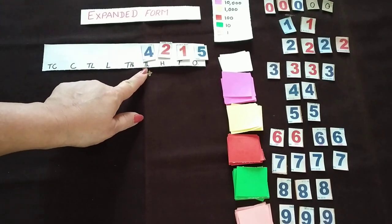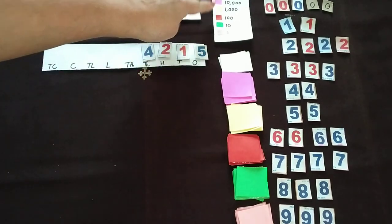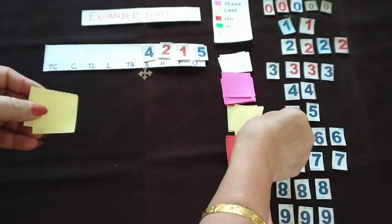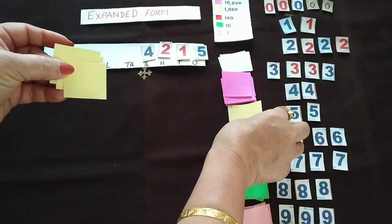So 4000. 1000 means which color here? 1000 means yellow color. So yellow color 4 sheets: 1, 2, 3, and 4.